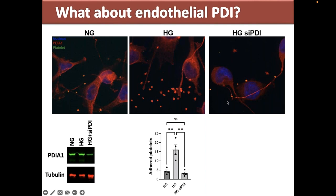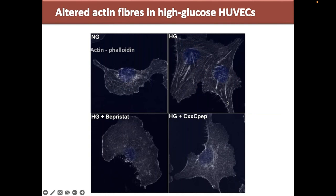We are focusing on HUVEC and what PDI does to these cells. Regarding the extracellular portion of PDI, we are interested in how the membrane is affected both physically and biochemically. We decided to look at actin, probing for F-actin using phalloidin. High glucose cells form thick actin fibers that are not really prevalent in normal glucose cells. When whole-cell PDI is inhibited with Bepristat, we don't see those actin fibers. When PEC-PDI is inhibited, we see some fibers but definitely not as many as in the high glucose condition.